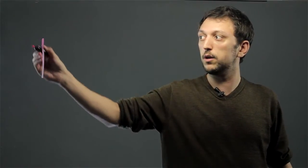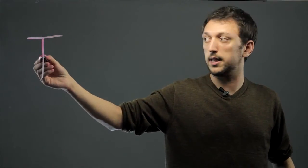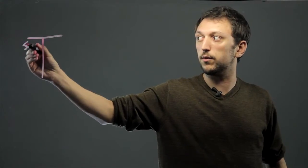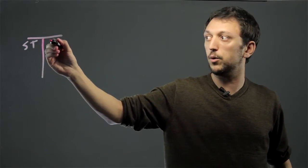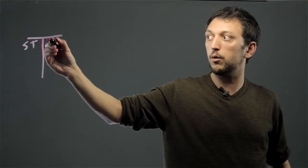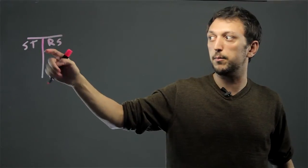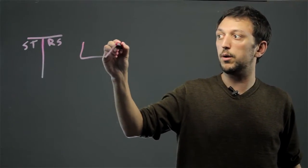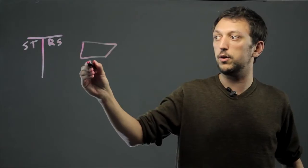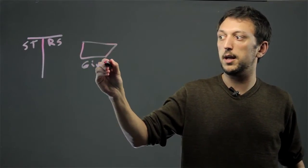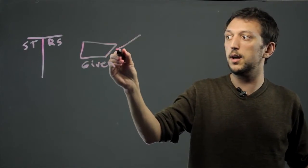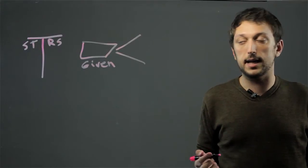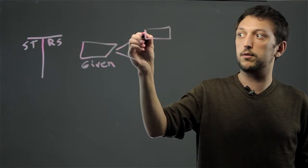So a regular proof would look essentially like this, where you'd put your statements over here and your reasoning over here, which I'm abbreviating as RS. In a flowchart, you would represent your original given statement in a box over here and then what you can extrapolate from that in follow on boxes.